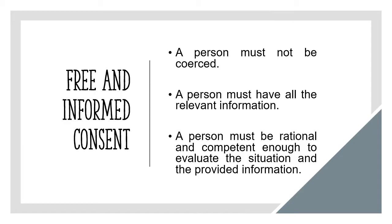First, a person must have free will and not be forced to consent. Second, all the risks and required information must be provided for the individual. Finally, a person must be sane, rational, and have the mental maturity and capacity to make use of all the given information and then make a decision. Putting all three criteria together, we get free and informed consent.